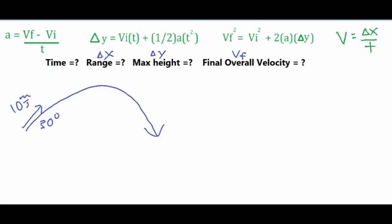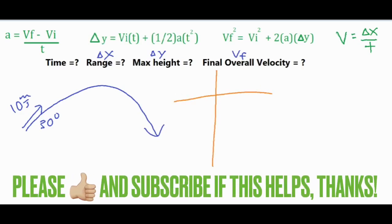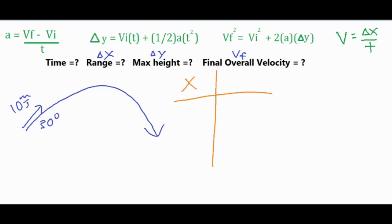As usual, we're going to want to separate everything into an x and y column. We do that because everything in the x direction is horizontal and does not have a net force, so it's moving at a constant velocity. Anything in this column we will only use the constant velocity formula. Everything in the vertical direction we place here because it's only directed up and down and has a net force due to gravity, so we're going to use all three of these acceleration formulas potentially.